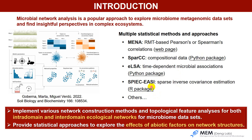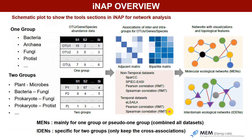So we implement all these network construction methods together and provide topological features analysis for intradomaine and interdomaine ecological networks. The pipeline also provides statistical approaches to find the effects of abiotic factors on network structures. The pipeline focuses on one group or two groups of species. One group can include bacteria, archaea, fungi, plants and others. Two groups can include plant microbiomes, bacteria, fungi and others. The associations can be separated into unipartite metrics and bipartite metrics. We use molecular ecology networks to describe unipartite metrics and interdomaine ecological networks to describe bipartite metrics.